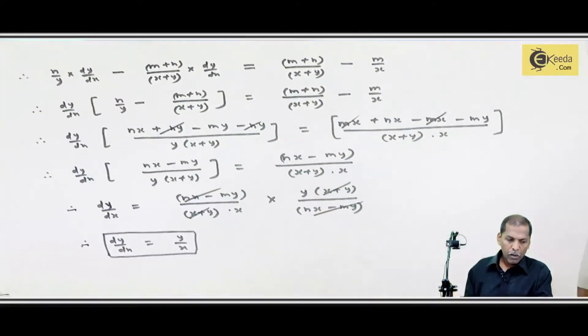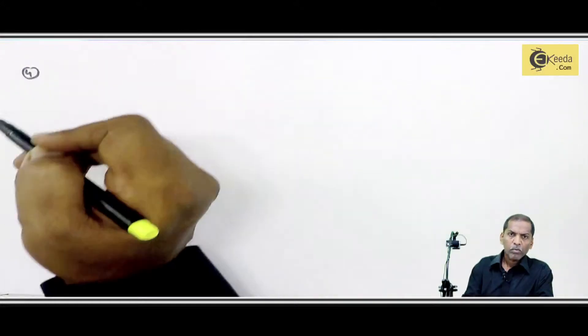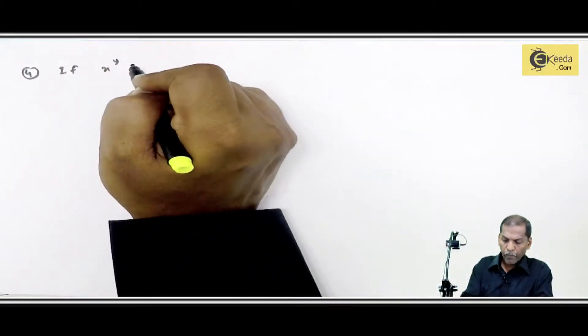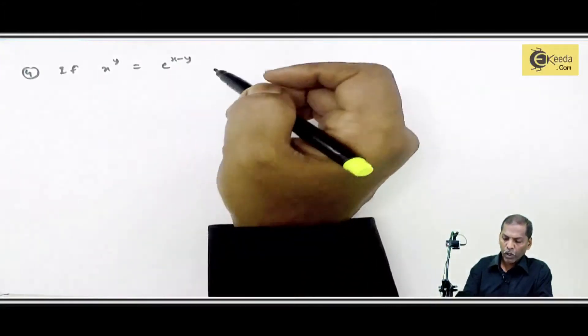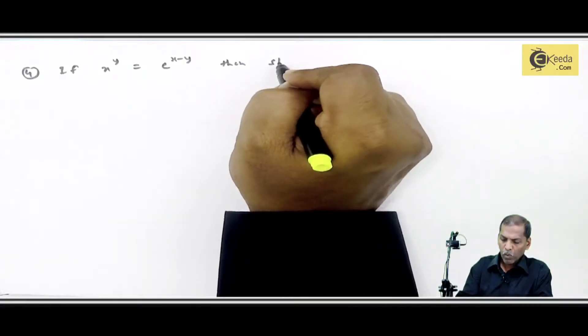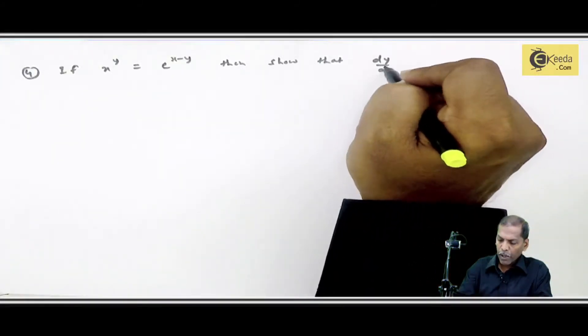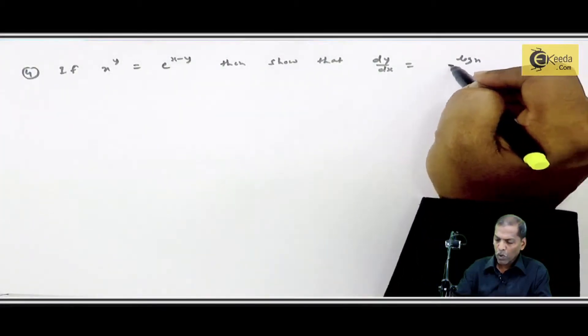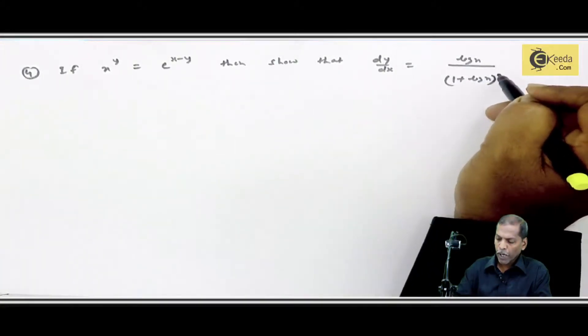Now we solve next problem, question number 4. If x raise y is equal to e raise x minus y, then show that dy upon dx is equal to log x upon 1 plus log x bracket square.